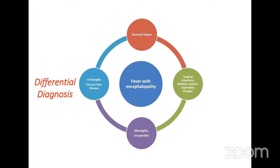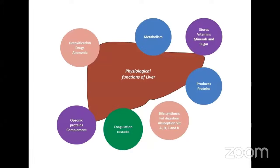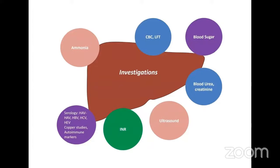When a patient comes with fever, jaundice, and encephalopathy, we should not directly conclude liver failure — we should first rule out tropical infections like malaria, enteric fever, leptospira, and dengue, as well as meningitis, encephalitis, sepsis with multi-organ dysfunction, and cholangitis. We also have to rule out CLD. Regarding liver biopsy before ruling out CLD — since these patients have coagulopathy and high bleeding risk, liver biopsy should be performed via the transjugular route at experienced centers. Biopsy helps mainly in ruling out alcohol-induced liver disease, malignancies, and CLD.